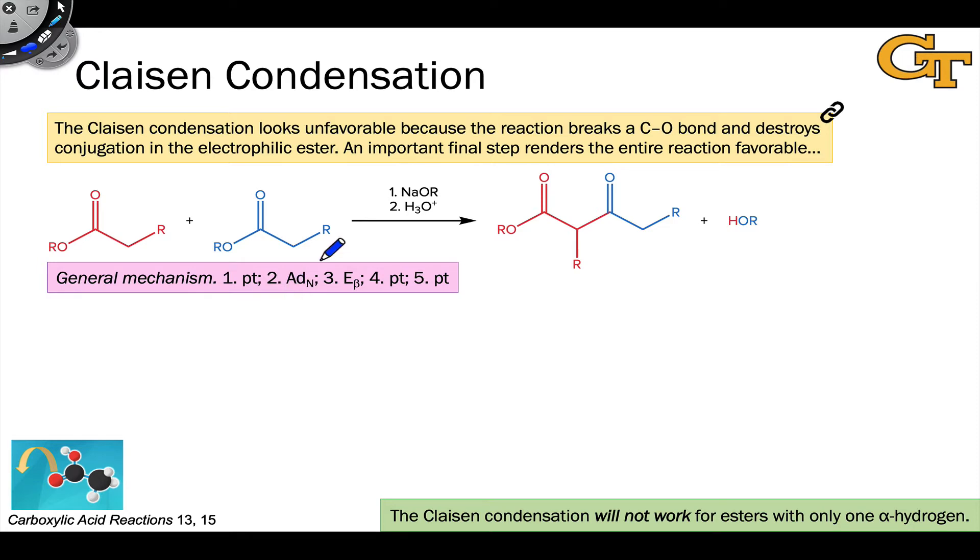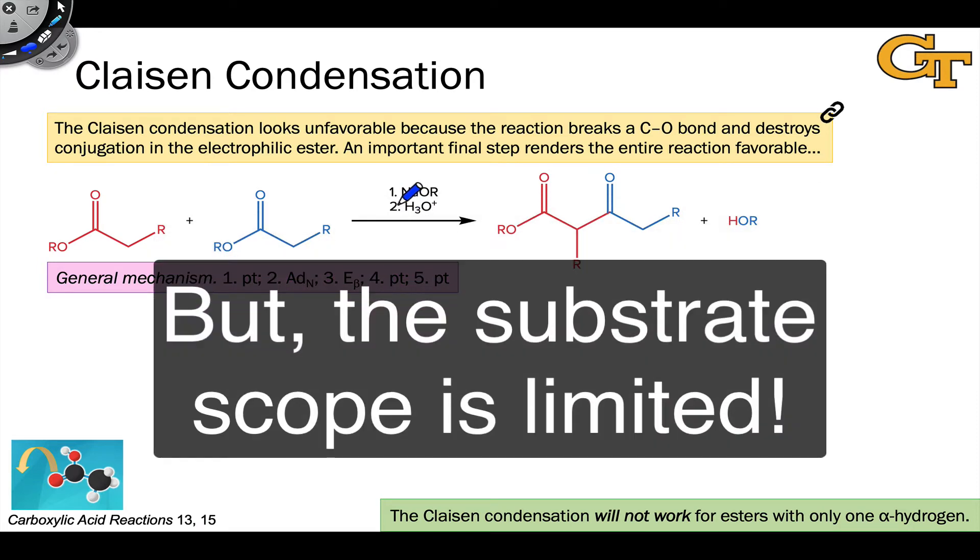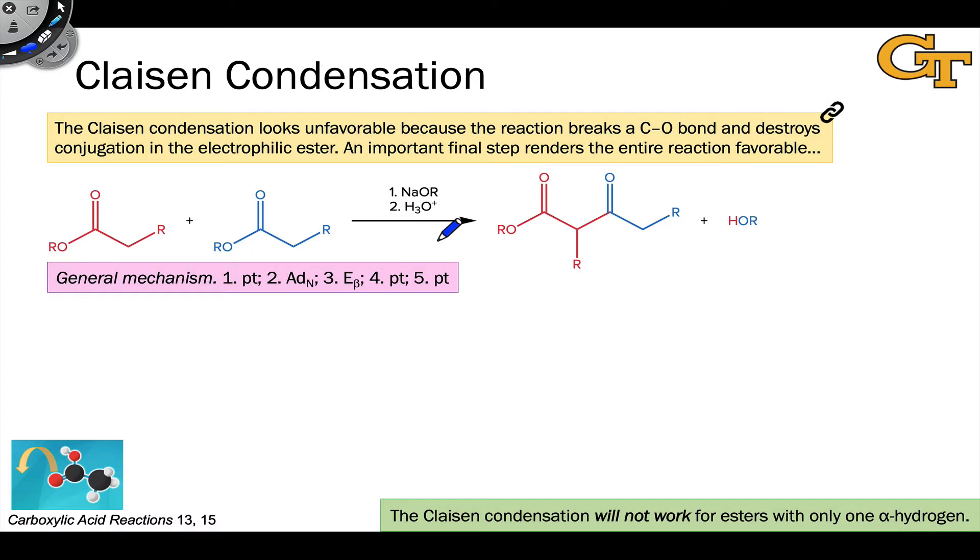However, the reaction still goes, provided we use a full equivalent of alkoxide base followed by acidic workup. This is because of an important proton transfer step that occurs within the midst of the mechanism. While from a bird's eye view, the essence of the key bond formation involves nucleophilic addition followed by beta elimination or nucleophilic acyl substitution, it's this fourth step, this key proton transfer, that really drives the reaction thermodynamically and puts an important constraint on the types of substrates that work in this reaction.